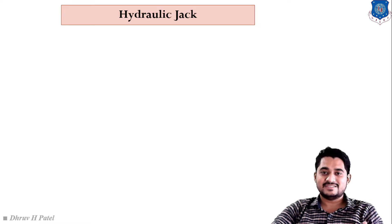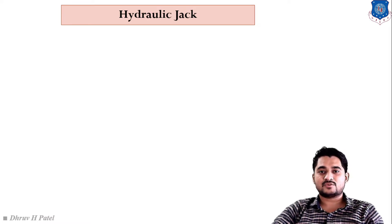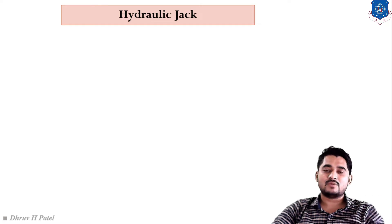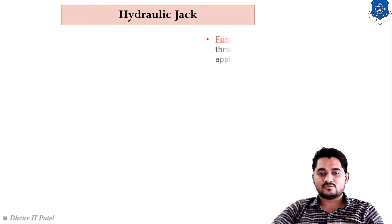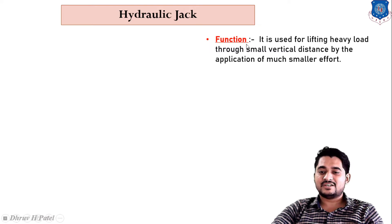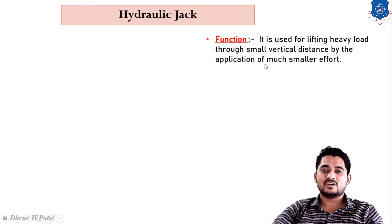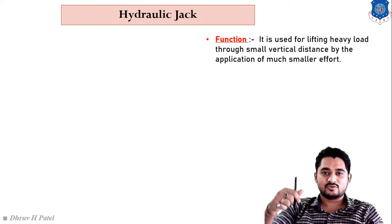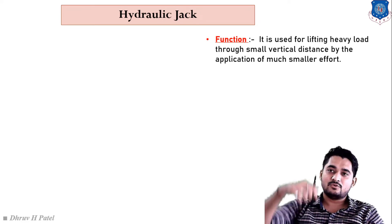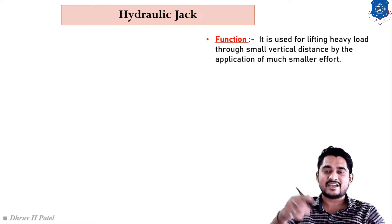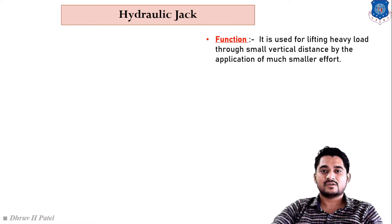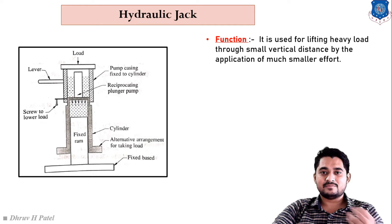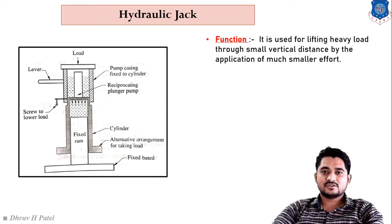Our next machine is the hydraulic jack. The hydraulic jack is used in any type of automobile for lifting the automobile for maintenance purposes. Its function is lifting a heavy load through a vertical distance by application of a much smaller effort. For example, if we want to fix a puncture in a four-wheeler, we use a hydraulic jack to lift the vehicle and easily remove any wheel.